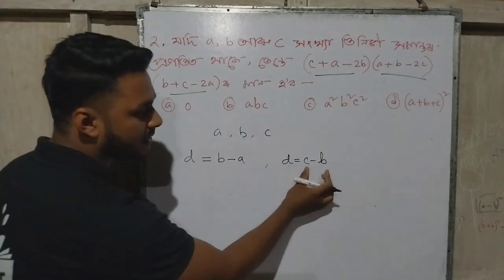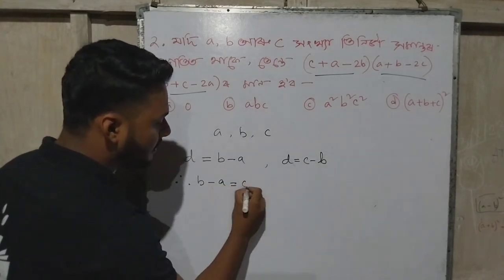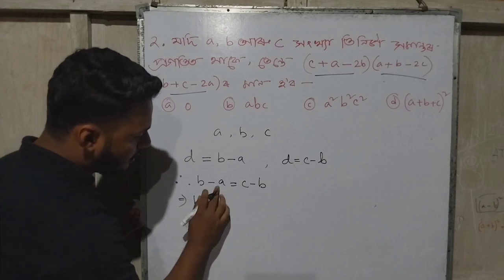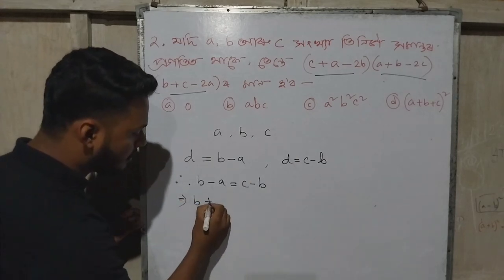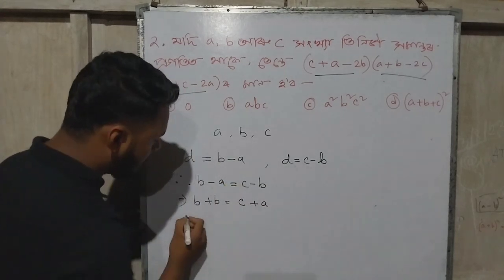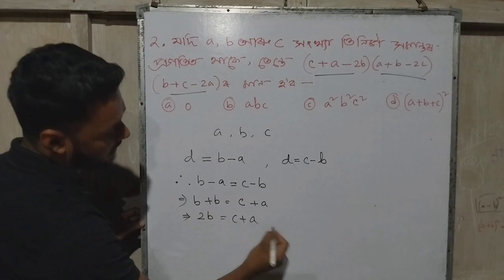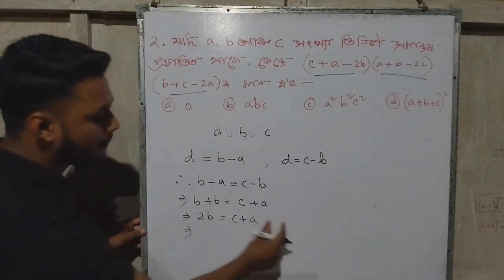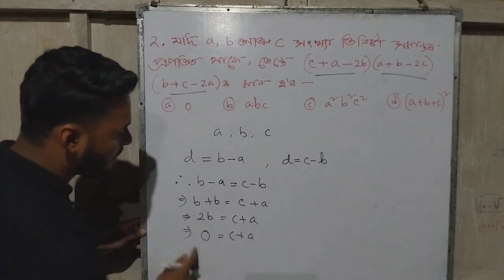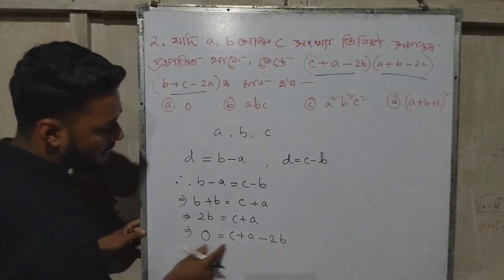So let's start with this one. If a, b, c are in AP, then a minus b equals b minus c. So a plus b equals c, and 2b equals c plus a. Now e_pn: a minus a gives us that 2b is equal to c plus a.